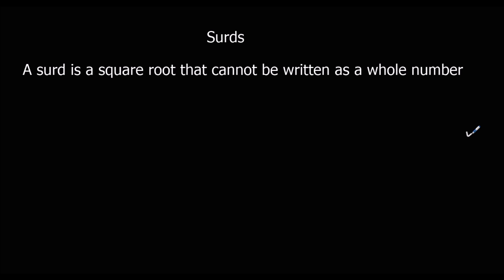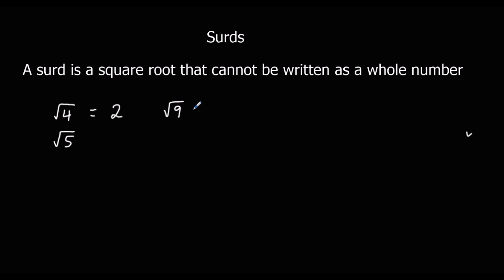A surd is any square root that cannot be written as a whole number. So if I have square root 4, that is not a surd because square root 4 can be written as 2. Square root 5, on the other hand, cannot be written as a whole number, so square root 5 is a surd. Apart from the square numbers — square root 4, square root 9 which is 3, square root 16 which is 4 — other square roots are surds.